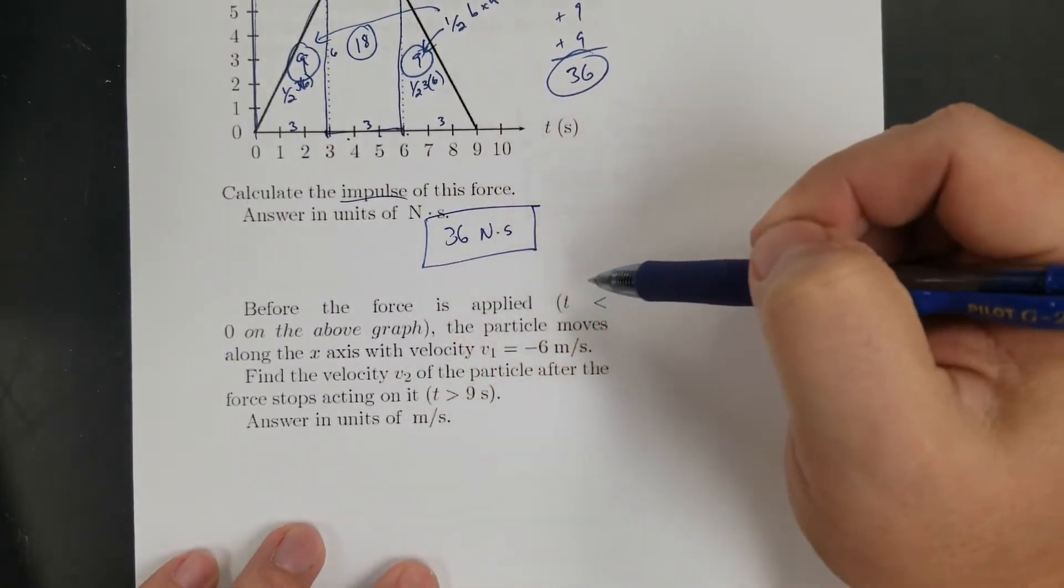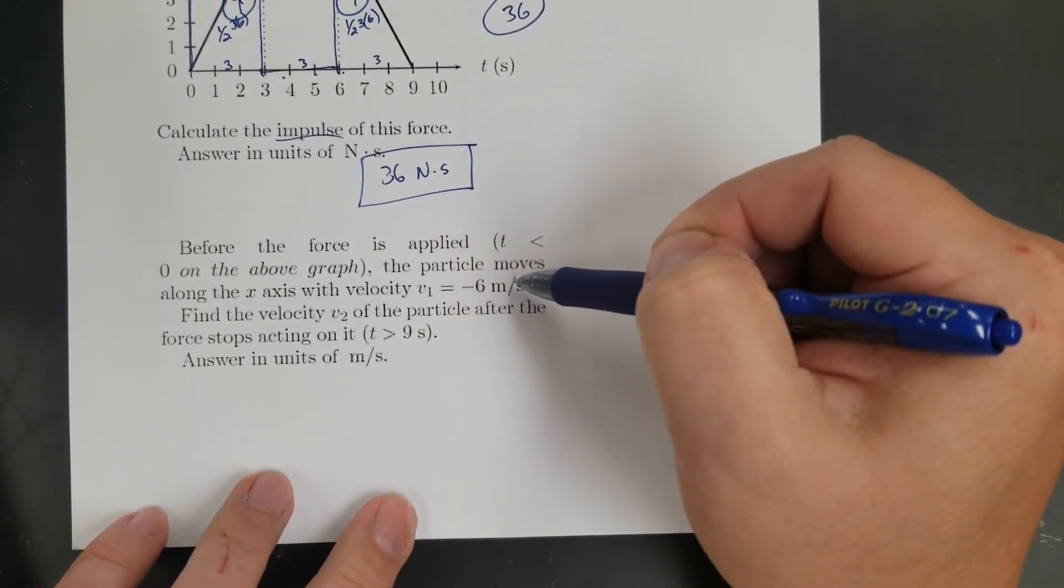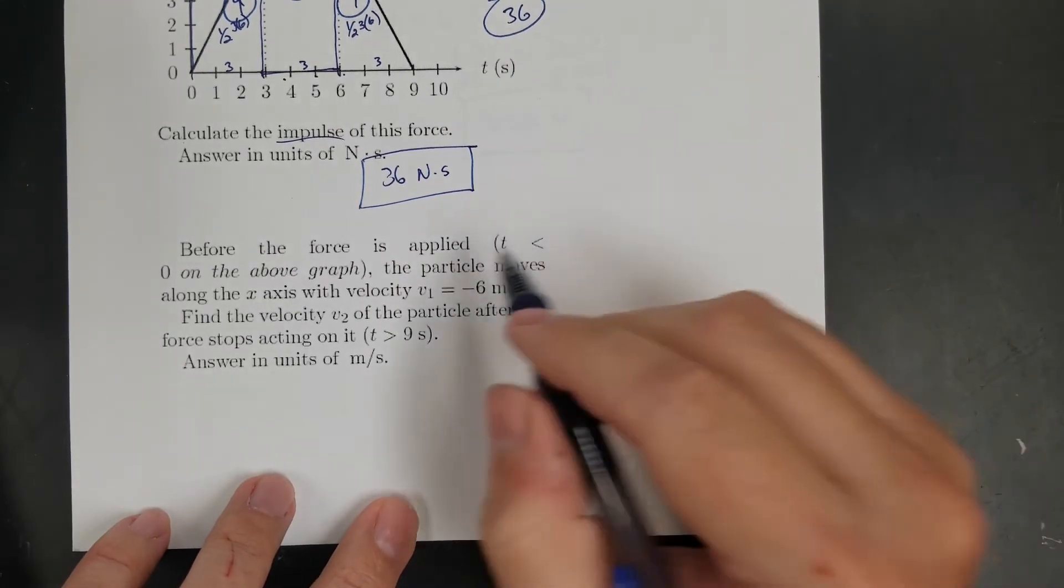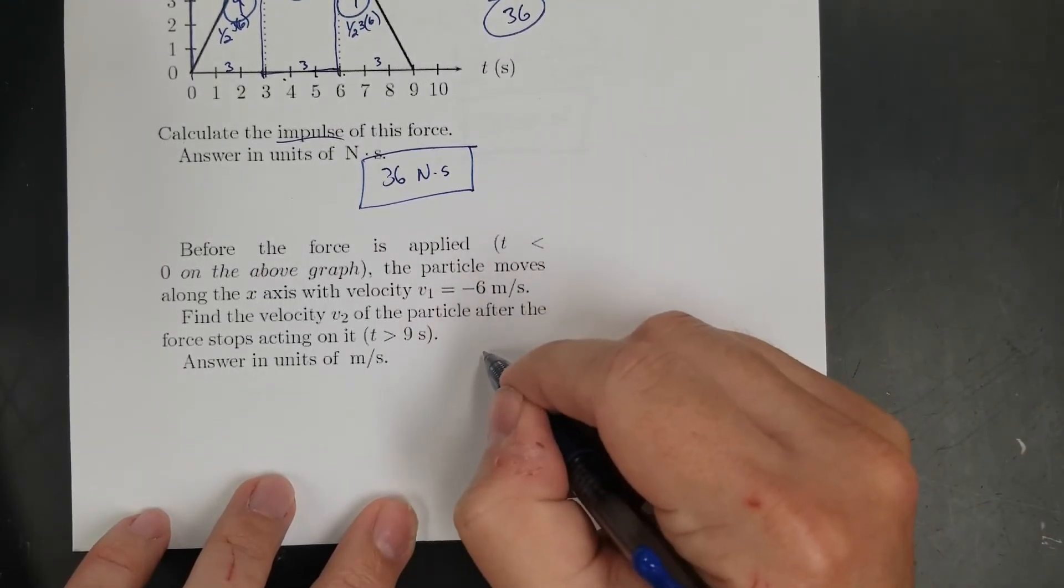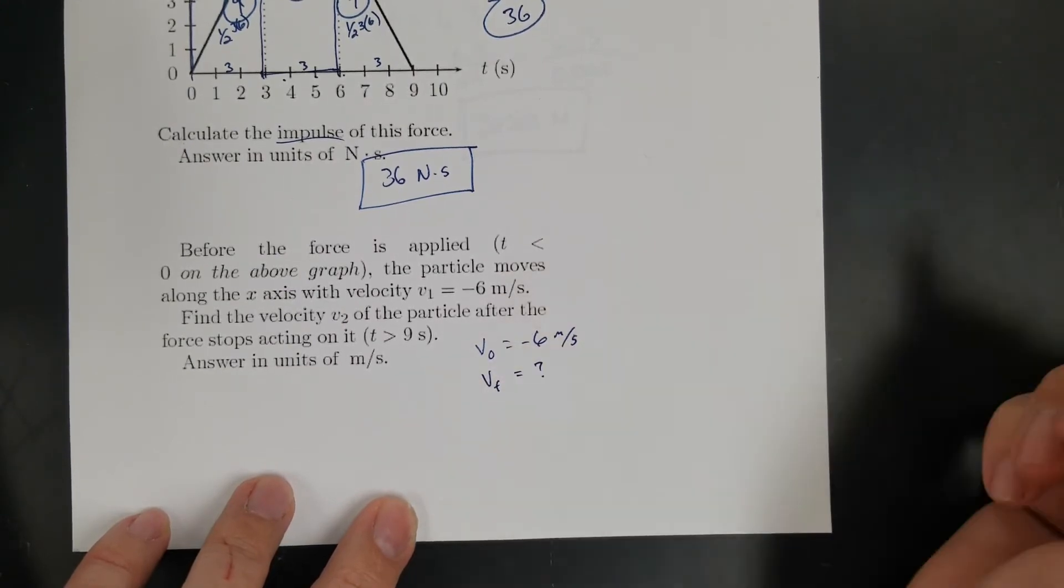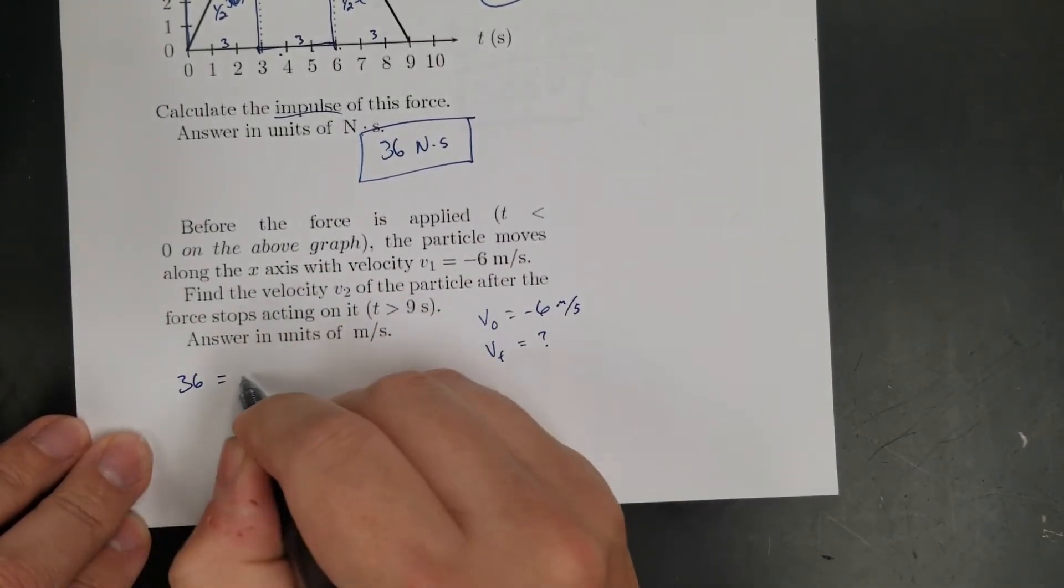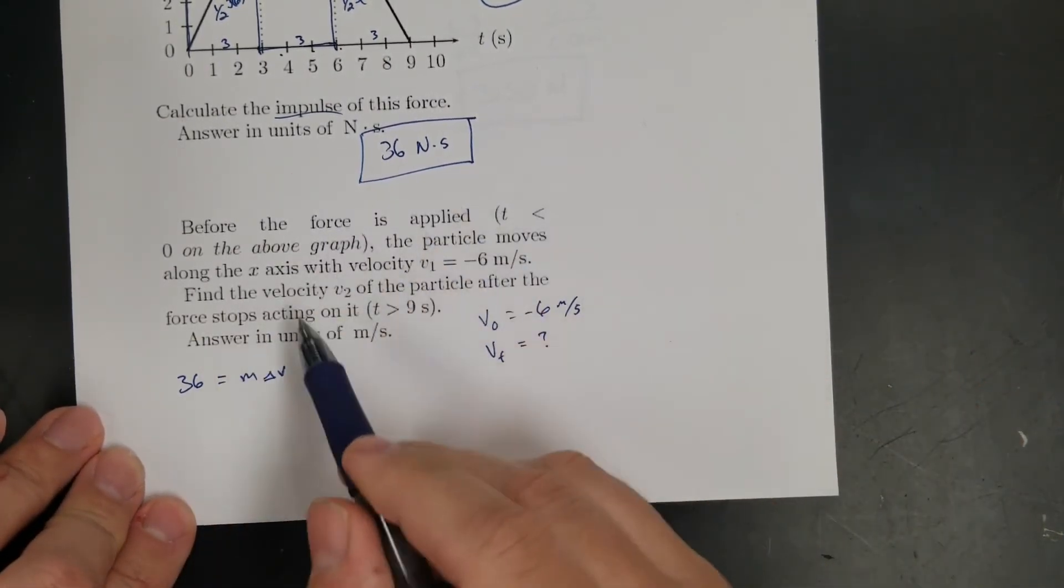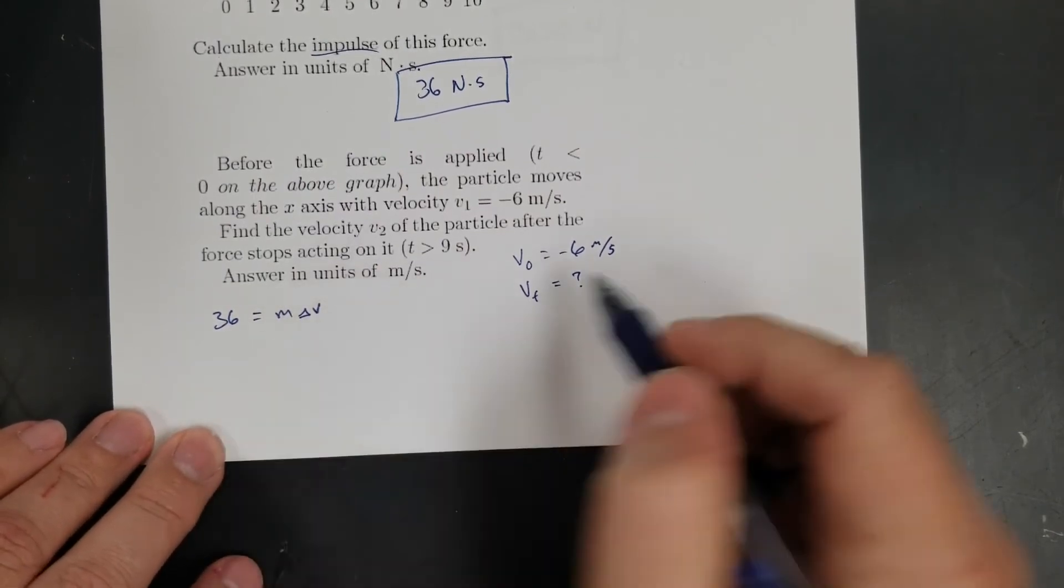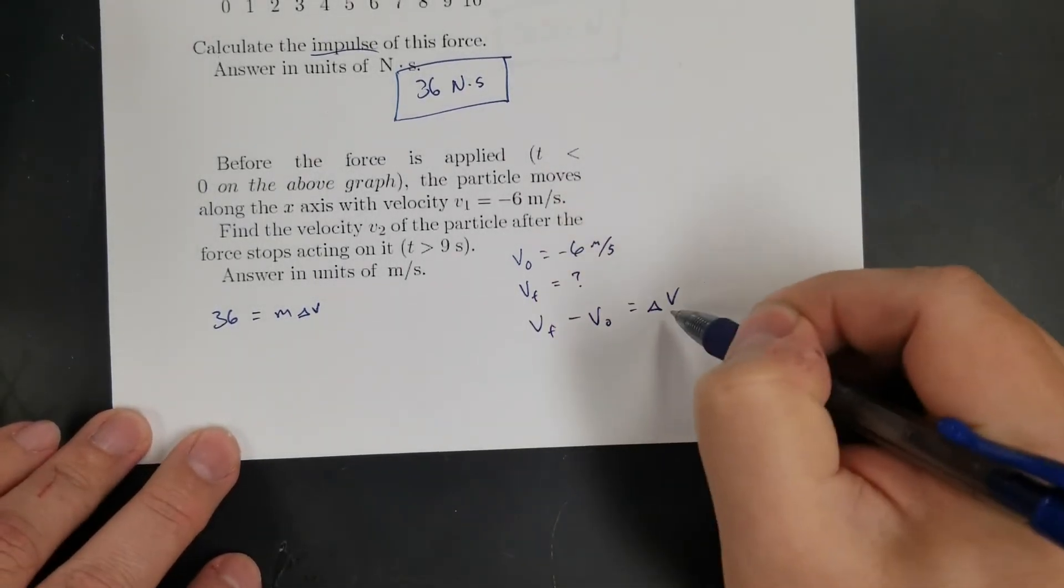Before the graph, before the force is applied, T is less than zero on the graph. The particle moves along the x-axis with a velocity of negative six meters per second. Find the velocity V2 of the particle after the force stops acting on it. Okay, so my initial velocity, so I need my final velocity, right? So my initial velocity is negative six meters per second. My final velocity is what I want. And if I know the impulse, oh, there we go. Okay, so if I know the impulse, impulse is equal to mass times change in velocity. And do I know the mass? Do I know the mass? I do. It's five kilograms. So this is how I'm going to get it. So I can get delta V, and then final minus initial will equal delta V. And I know my initial, so then I can solve for my final. Okay, so let's do this.